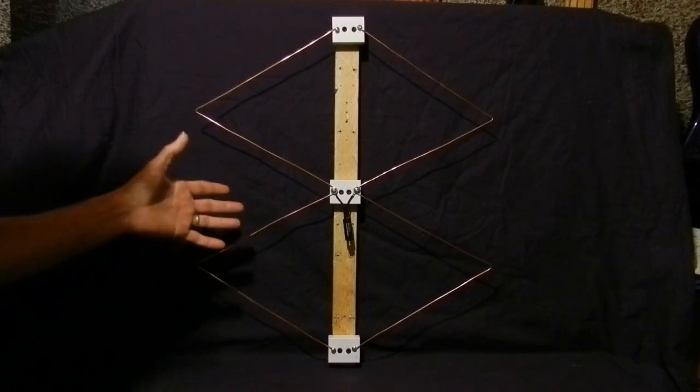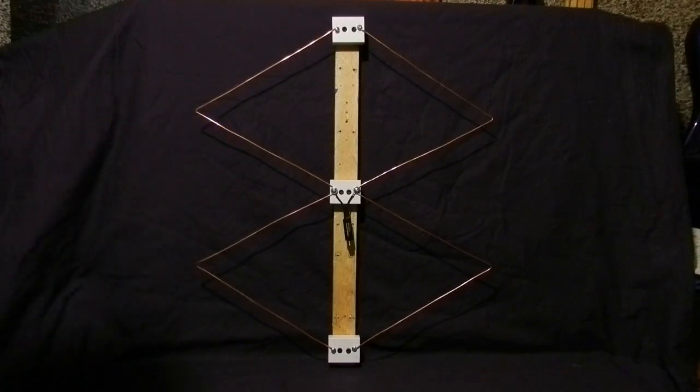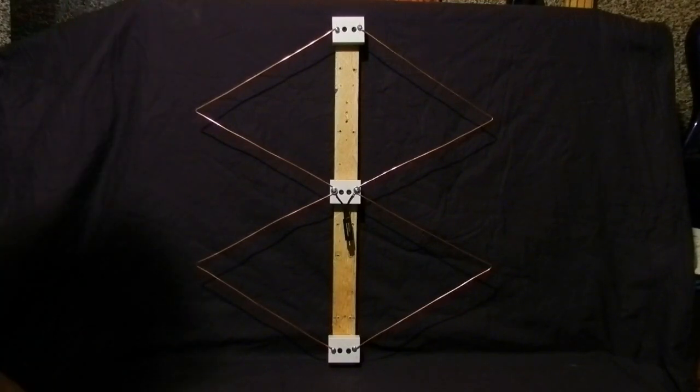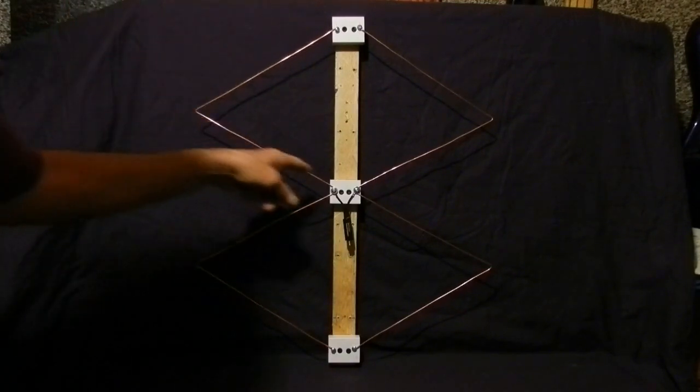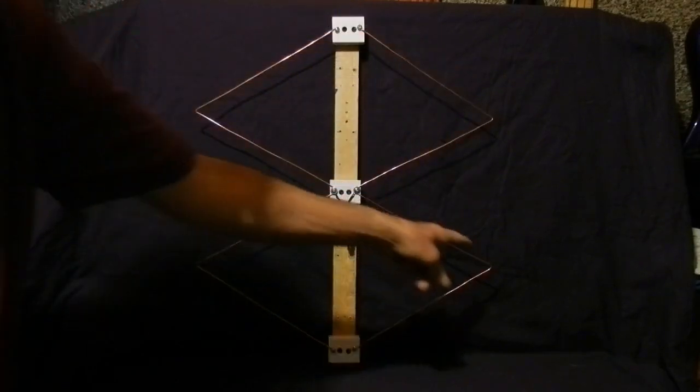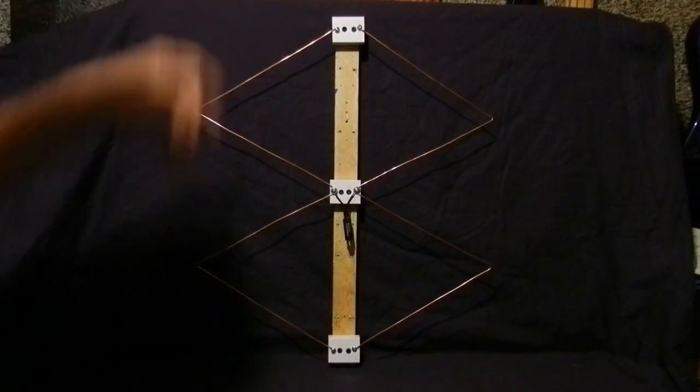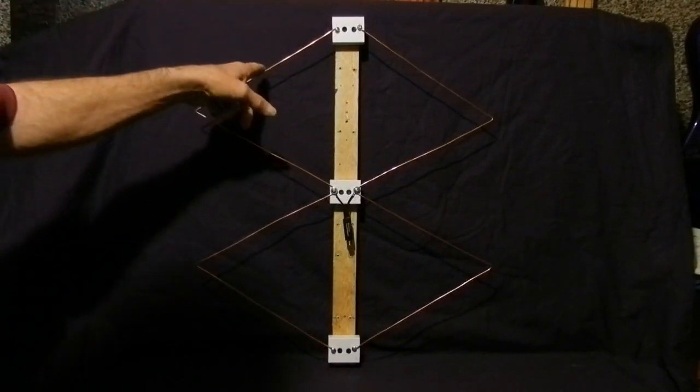This right here is probably the easiest antenna design that I have built. It consists of two continuous wire elements, one on each side.